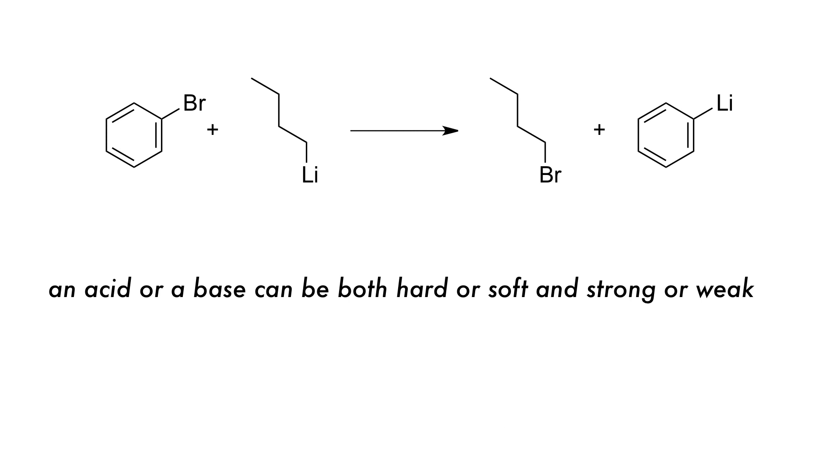There is nothing preventing an acid or a base from being both hard or soft, and strong or weak. The reaction to form phenyl-lithium does not make much sense if we think both the product and reactant are soft-hard combinations, until we consider that the butyl chain is a better Bronsted-Lowry base than phenyl. This means that whilst a hard-soft product is still formed, a more favorable pairing is found between bromine and the butyl chain.